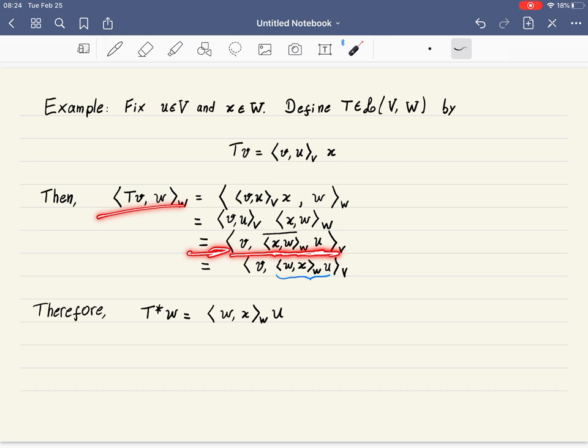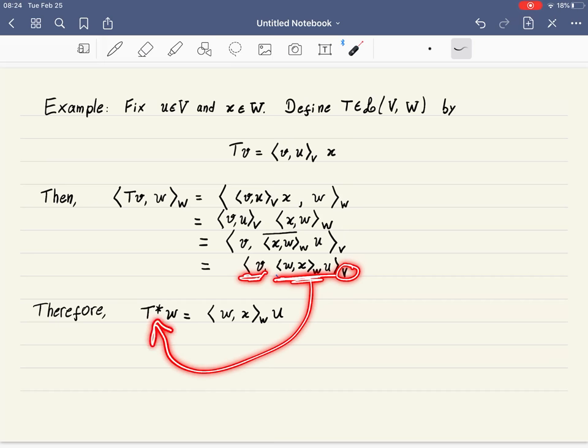So this finally equals V, x W conjugate, W times u. We could have stopped here, but I want to do it more properly. Let's flip x and W so we get rid of this conjugate. When we flip x and W, the complex conjugate disappears. What we started with was T V comma W inner product in W. We ended with V comma something inner product in V. That something has to be T star W.